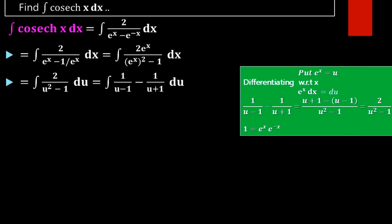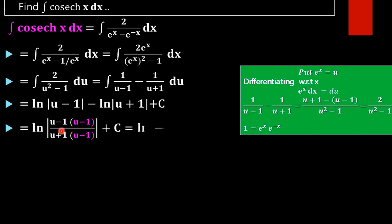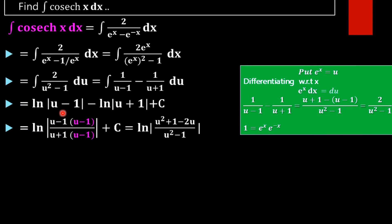On integrating we get log|u − 1| minus log|u + 1| plus C. Since the original function is in terms of x we need to rewrite it accordingly. Using the log property log(a/b) = log a − log b, this becomes log|(u − 1)/(u + 1)| plus C.